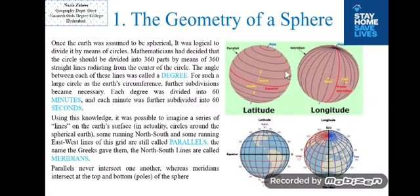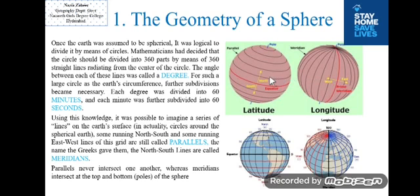Once the Earth was assumed to be spherical, it was logical to divide it by means of circles. Mathematicians decided that the circle should be divided into 360 parts by means of 360 straight lines radiating from the center of the circle. The angles between each of these lines was called a degree. For such a large circle as the Earth's circumference, further subdivisions became necessary. Each degree was divided into 60 minutes and each minute was further subdivided into 60 seconds.